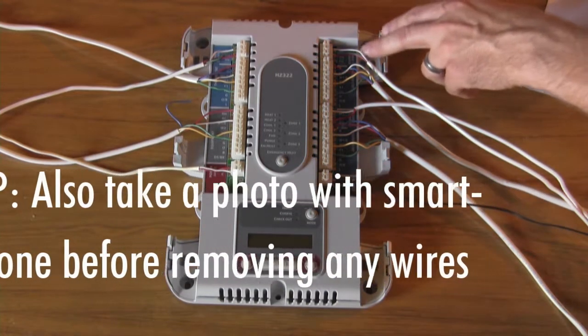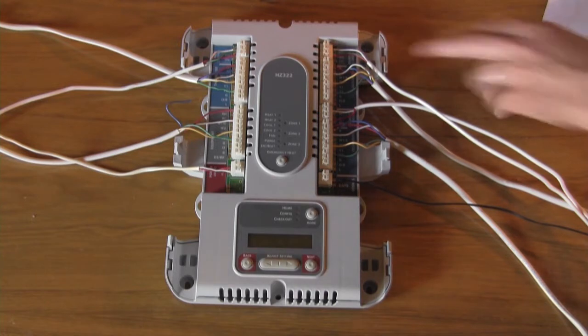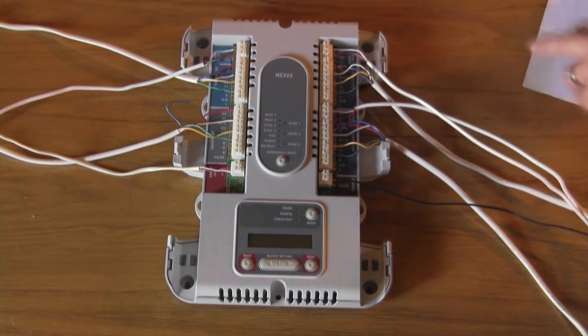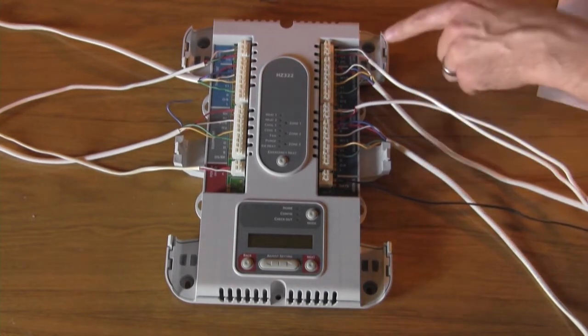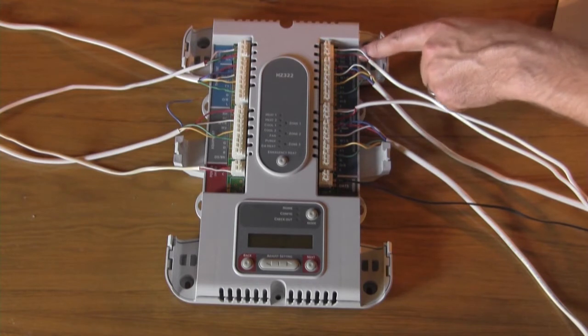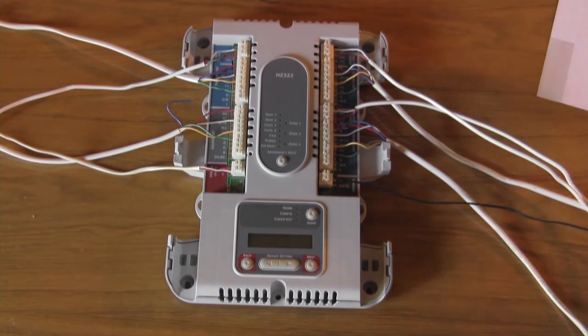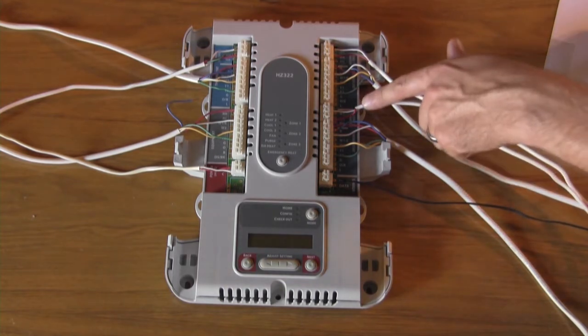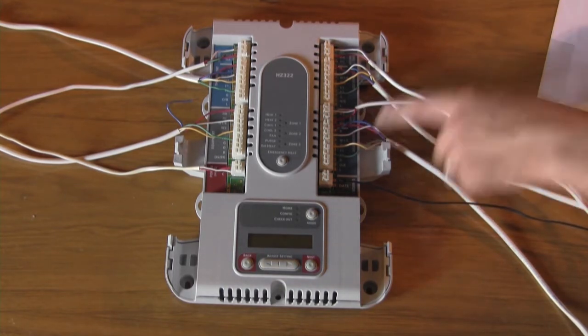So each of these terminals is labeled and we'll just want to use those labels to create a label for each one of the wires plugged in. This one is a zone damper one, this is zone thermostat one, zone damper two, zone thermostat two, etc.